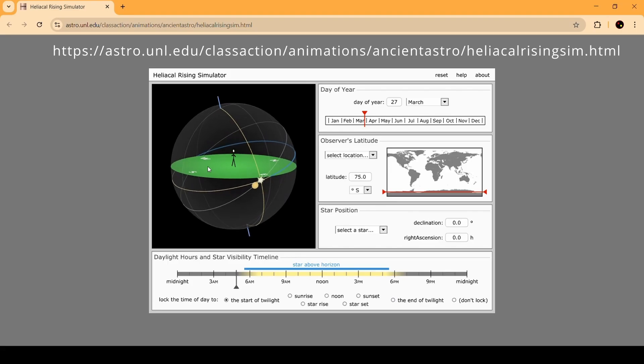This simulation from the NAP website helps us to visualize path of the stars as well as the sun throughout the year, for a given latitude as well as the time of the day.